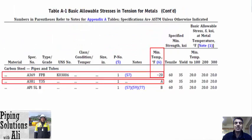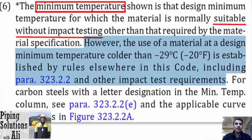Referring to previous sessions of this course, you are familiar with Table A1 — basic allowable stress intentions for metals of ASME B31.3. This table is used for specifying allowable stress of materials listed per temperature, and is also used for determining minimum temperature. Referring to Note 6 of this table: the minimum temperature shown is the design minimum temperature for which the material is normally suitable without impact testing other than that required by the material specification.